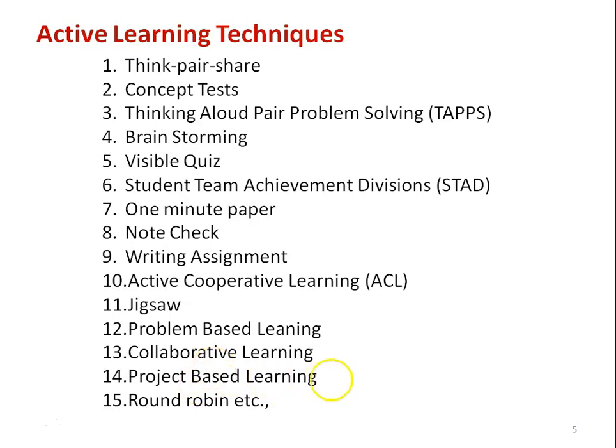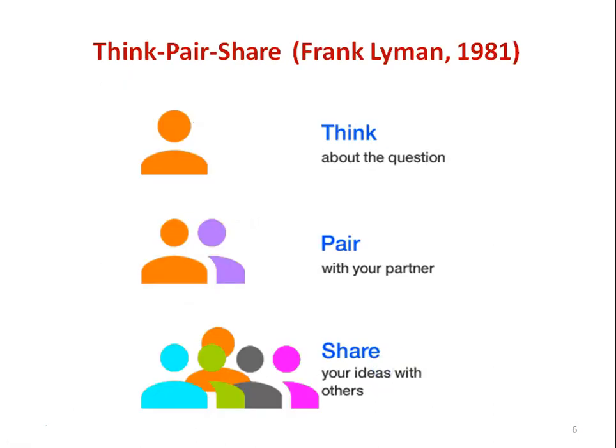The first activity is think-pair-share. It was first formulated by Frank Lehman in 1981. Think about the question — every individual student will think about the question. Then they will pair: they join with a neighbor to discuss their thinking with their partner to enhance the thinking and improve the answer. Then they will share their answer to the entire classroom. That is think-pair-share — you pose a question, they individually think and respond, join with a neighbor, discuss the solution, and finally present the information to the entire class.